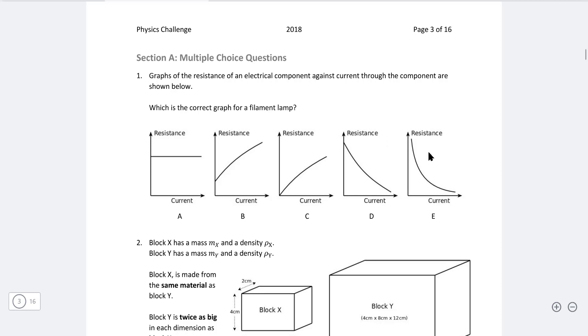Well, it's not going to be A because the resistance of a filament lamp changes with the temperature and hence with the current. The higher current means a higher temperature.